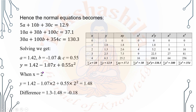In the second part, we have to verify x is equal to 2. We have to verify the difference between the actual value and the predicted value. Then we substitute x equal to 2 and x squared. We substitute x to get 1.48. The actual value when x equals 2 is 1.3.